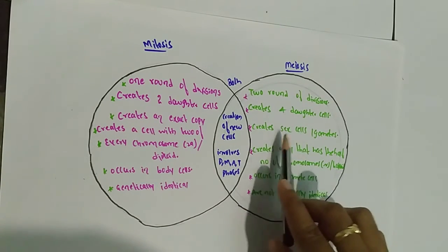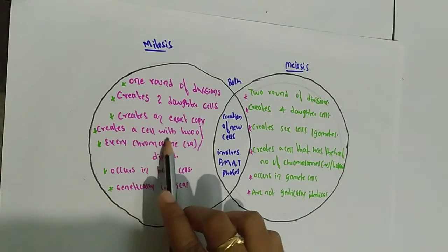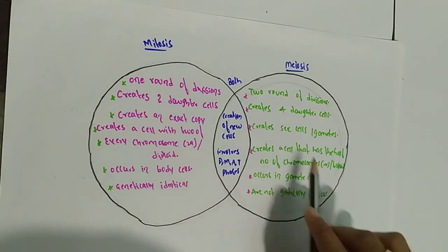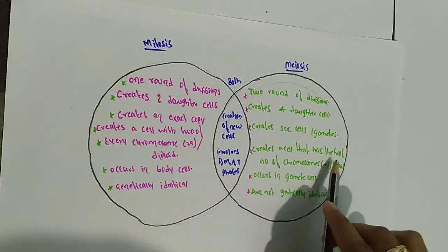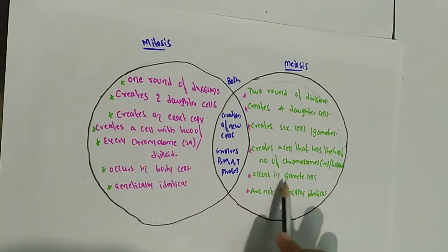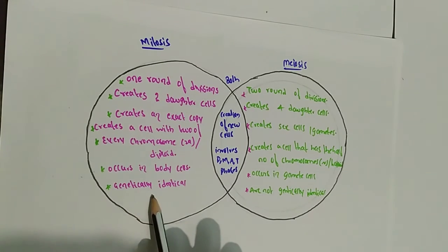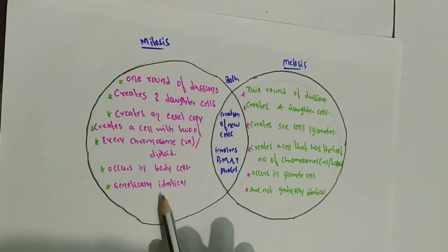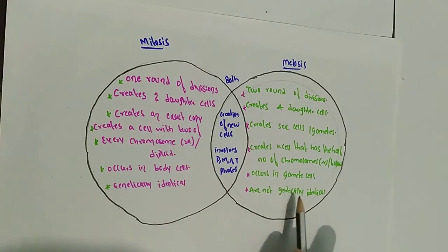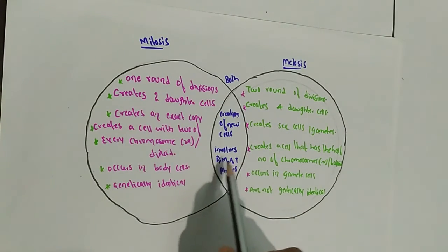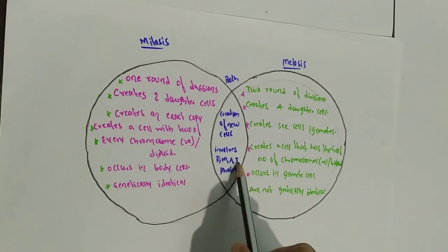Mitosis occurs in body cells and produces genetically identical daughter cells. Meiosis occurs in sex cells and the daughter cells are not genetically identical to the parent cell. In both types, the creation of new cells occurs and both involve the stages: prophase, metaphase, anaphase, and telophase.